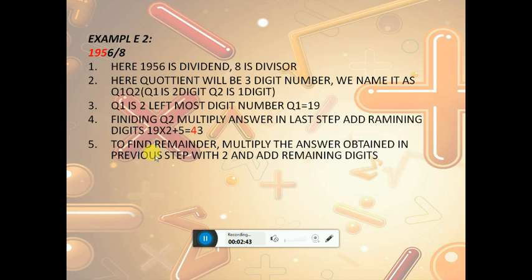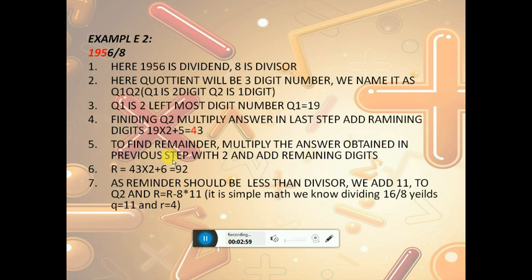Next, to find the remainder, multiply the answer obtained in the previous step, which is 43, with 2 and add the remaining digit 6. So 43 times 2 plus 6 equals 92. The remainder should always be less than 8. We know that 8 times 11 equals 88, so 92 minus 88 equals 4. The quotient will be 11 and r equals 4.